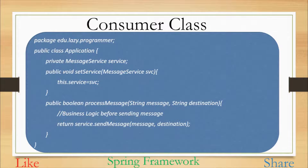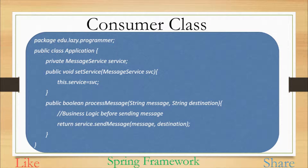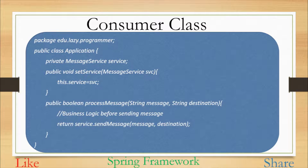Now let's see a consumer class for the created services. In the consumer class we will be using an object of the MessageService interface. There are two ways of injecting the dependencies of the service to the consumer: one is using annotations and the other is without annotations. Here we have MessageService as an instance variable and injection is being done using the setter function. In the processMessage function we are using the injected service to call the sendMessage function. Whichever implementation is configured, that particular implementation will be injected to this consumer class, and the sendMessage function of that implementation will be called.